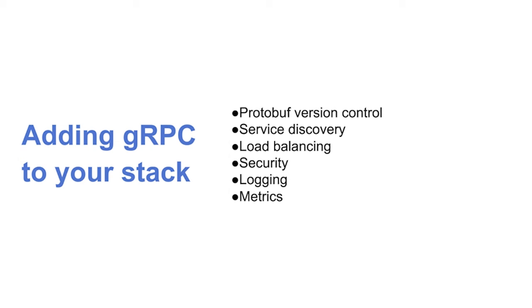Security, logging, and metrics are all very important things that gRPC has hooks for. In any real-world deployment you want authentication so services are only allowed to talk to other services they should. You want logging so you can trace things, and metrics so you can understand how your cluster is behaving.